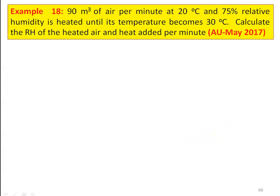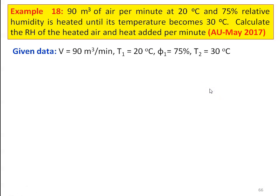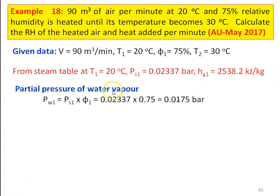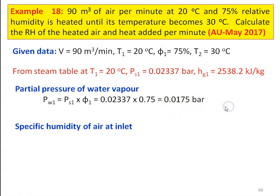Example number 18: 90 cubic meters of air per minute at 20 degree Celsius and 70 percent relative humidity is heated until its temperature becomes 30 degree Celsius. Calculate the relative humidity of the heated air and the heat added per minute. This is from May 2017 question paper. The given data: volume V equal to 90 meter cube per minute, T1 equal to 20 degree Celsius, φ1 equal to 75 percent, and T2 equal to 30 degree Celsius.